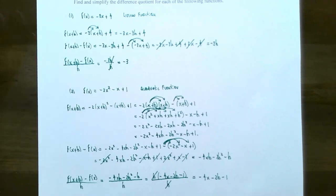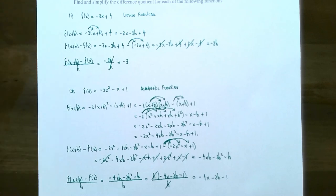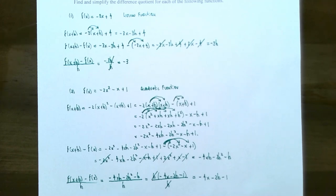So this gives you an idea of how to calculate the difference quotient for a couple of different functions — a linear function and a quadratic function. If you have any questions about any of the examples we talked about involving the difference quotient, or any questions while working on the homework for this section, please let me know. I'll see you at the next video when we talk about slope of a line.